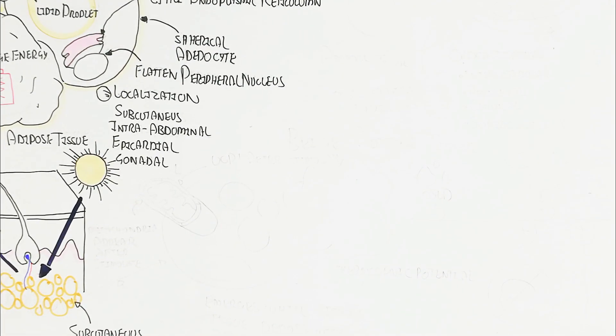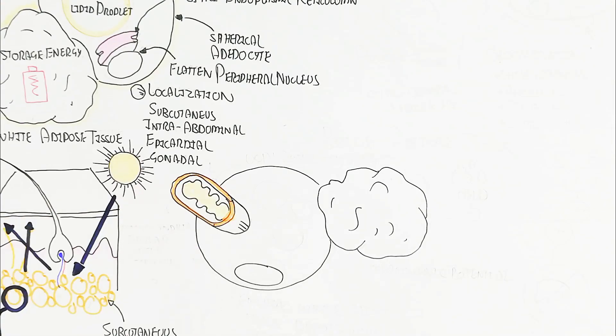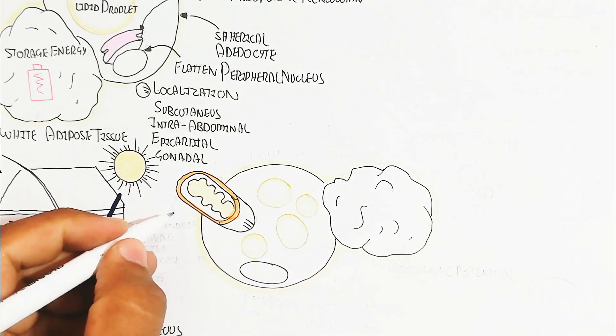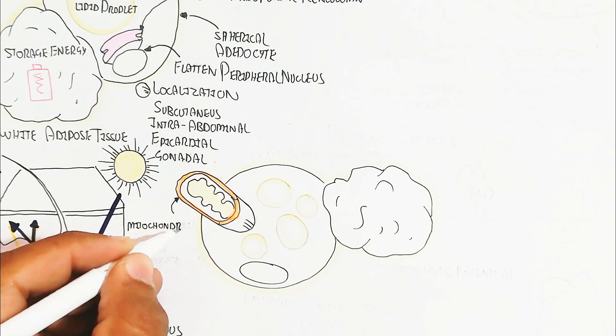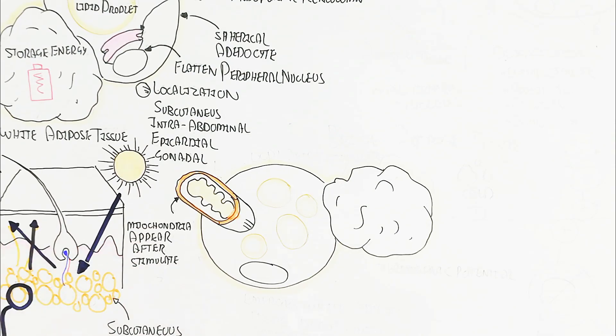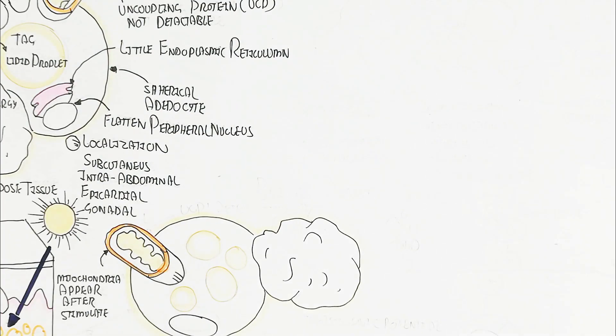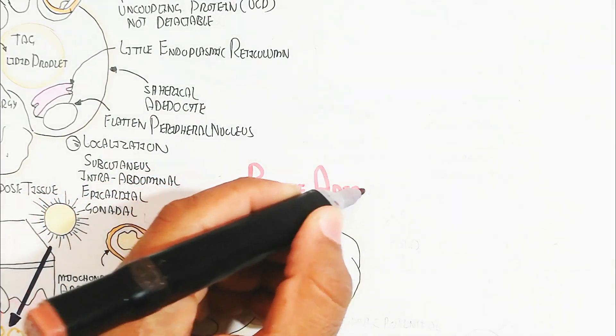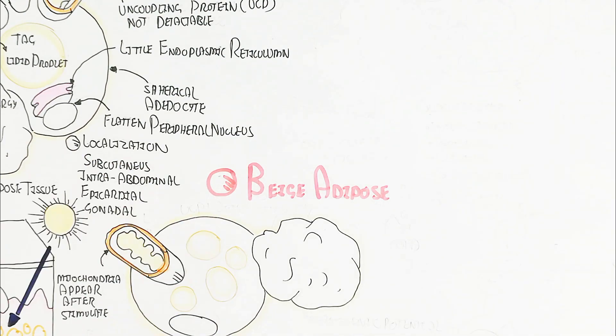Let's understand about the intermediate and then we will understand about the brown fat. Intermediate fat cell is beige adipose tissue. Contains mitochondria appear after stimulation but less. But also contains UCP-1 after stimulation. UCP is important for the production of heat.